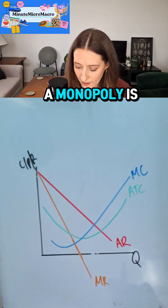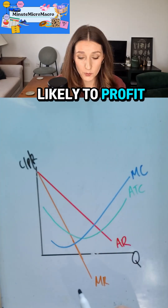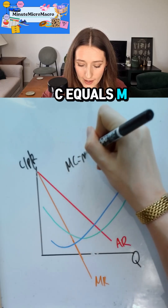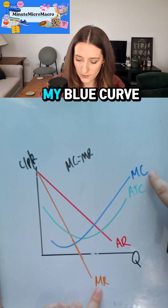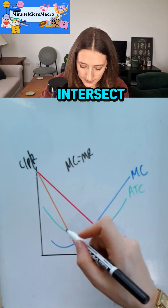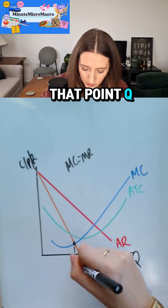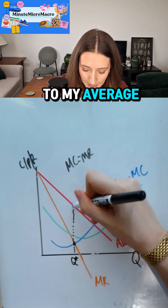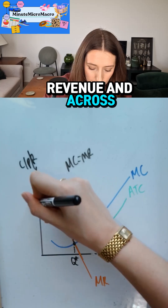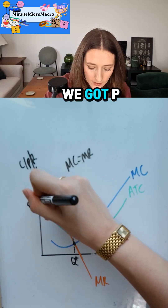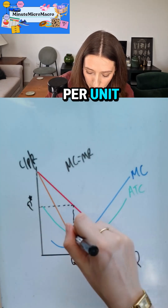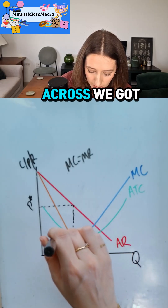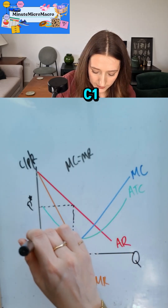We know a firm that is a monopoly is likely to profit maximize where MC equals MR — so where my orange curve and my blue curve intersect. I'm going to label that point q*. To read the price, I go up to my average revenue and across — I'm going to call that p*. Then the cost per unit: I go up from q*, hit average total cost, and go across — I'll call that c1.